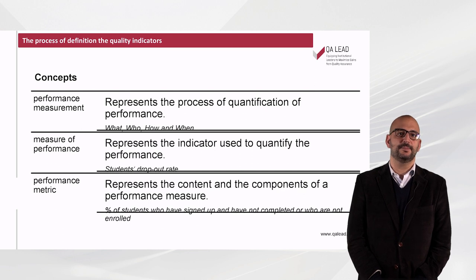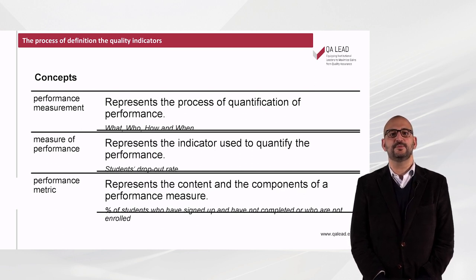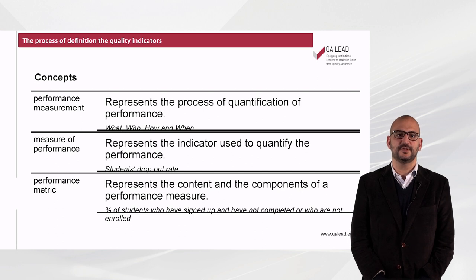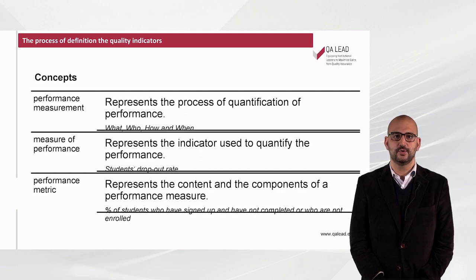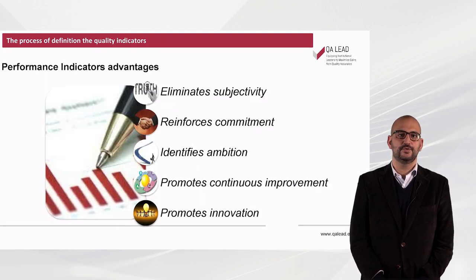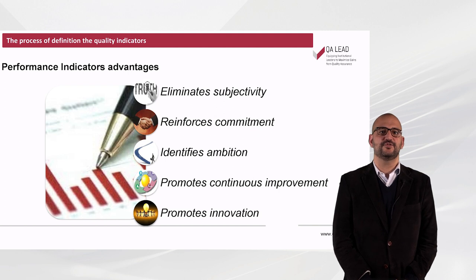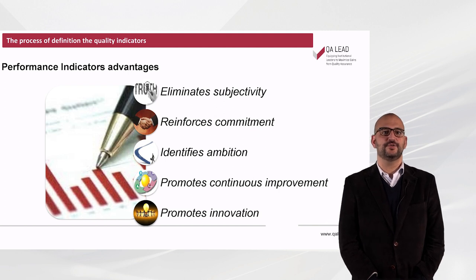The measure of performance would be the dropout rates. And finally, the performance metric, which represents the concept and the components of the performance measure. For example, the percentage of students who are signed up and have not completed — who are not enrolled. The use of performance indicators has numerous advantages.